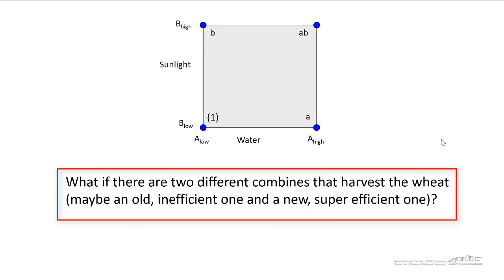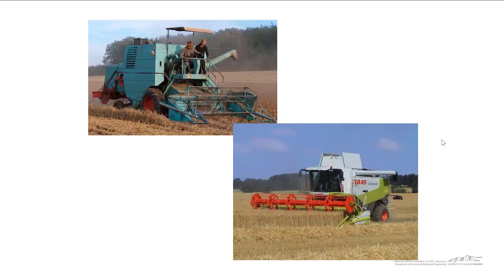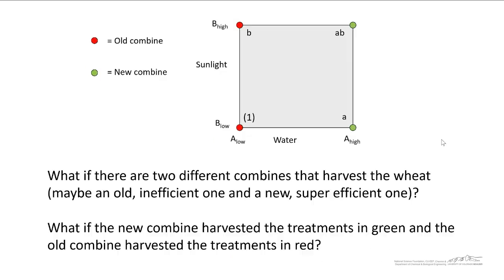Now what if there are two combines that harvest the wheat? So a combine is an actual tractor that harvests the wheat. Maybe we have an older one up here on the left, and we have a brand new super efficient one down here on the right. And in order for you to harvest the wheat on time, you have to have half of it be harvested by this old one, and half of it harvested by the newer one. There's a couple of different ways that we can split our experimental runs into the old combine and the new combine. In other words, how we can block the experiments.